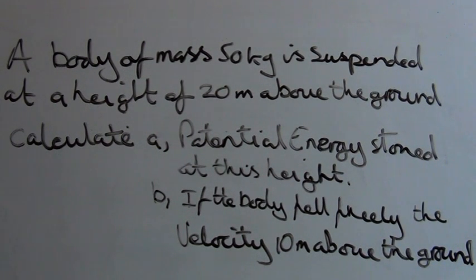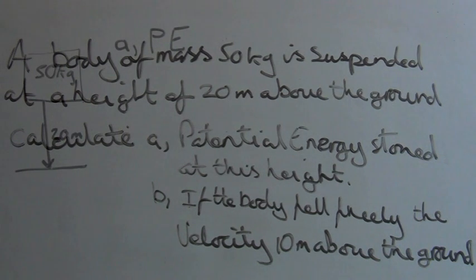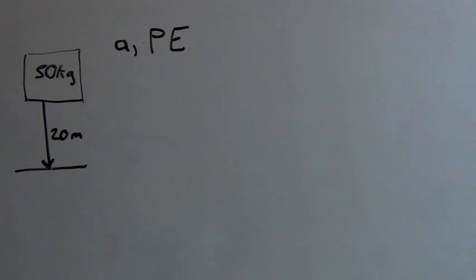A body of mass 50 kilograms is suspended at a height of 20 meters above the ground. Calculate A, potential energy stored at this height, and B, if the body fell freely the velocity 10 meters above the ground. So first we're going to find the potential energy stored at 20 meters with the body 20 meters above the ground.